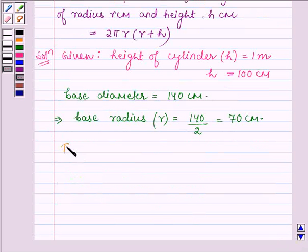We have to find the total surface area of the cylinder, and that will be equal to the area of sheet required.